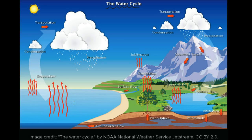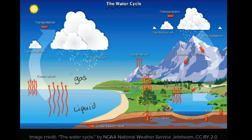We could start with the surface of the ocean, or a river, or a lake. At any given moment, there's going to be water evaporating off of that surface — water molecules that were in their liquid state just have enough energy to bounce away and go into the gas state. Water in a gaseous state we call water vapor.